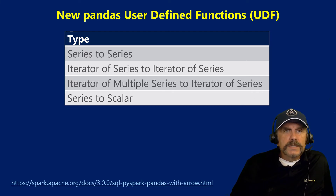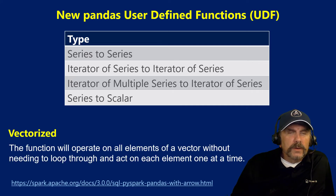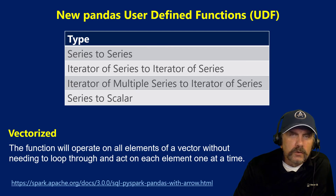We'll talk about series to series, iterator of series to iterator of series, iterator of multiple series to iterator of series, and series to scalar. The big takeaway is that these are vectorized functions. Vectorized operations perform much faster than if you just step through row after row in an array to process things — they can work much faster and more efficiently.